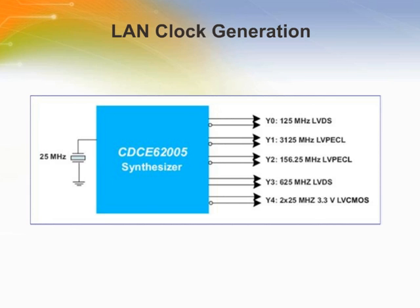Here we show a solution on how to generate networking LAN clocks from a single CDCE62005 device. For LAN applications, typical clock speeds are 625 MHz, 312.5 MHz, 156.25 MHz, and 125 MHz, and the output signal type needed can be differential or single-ended 3.3 volt LV-CMOS. The 25 MHz reference is then fed into the CDCE62005 VCO core to generate a 625 MHz frequency available to all five output MUXs.